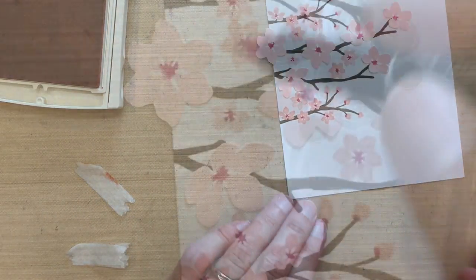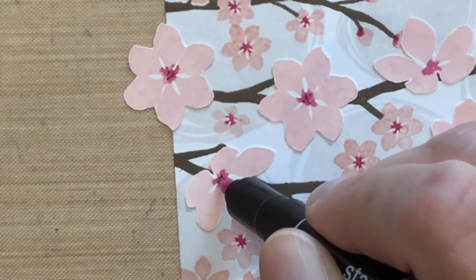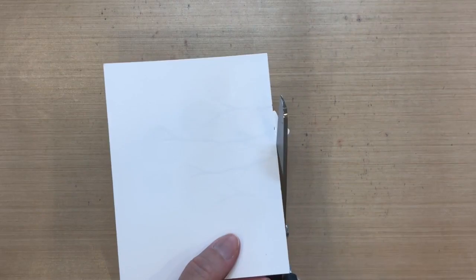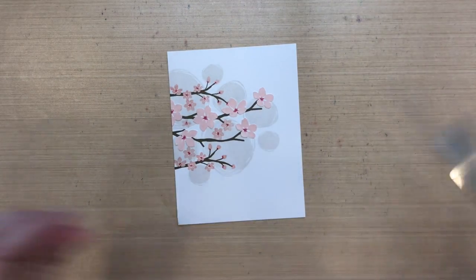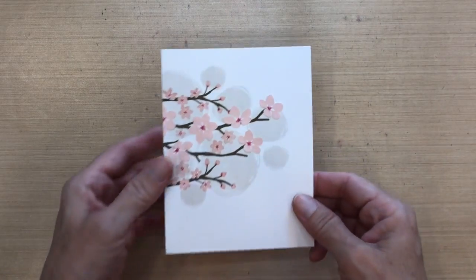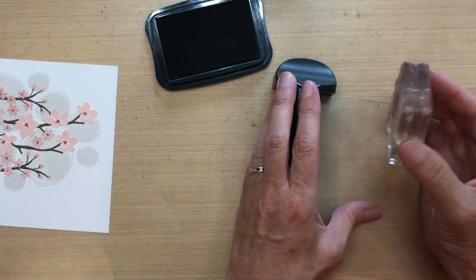I decided to accentuate those middle parts of the flower just a little bit more by taking the fine tip of that same marker and just adding some darker dots in the center. Now I'm going to trim off that flower that was hanging over the edge, and then I'm going to trim this panel a quarter of an inch on the side and the bottom. And then for my sentiment,